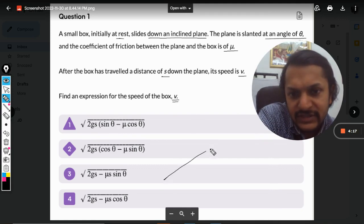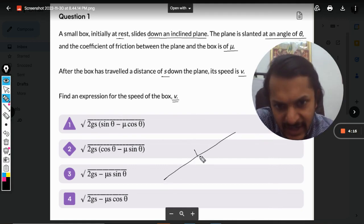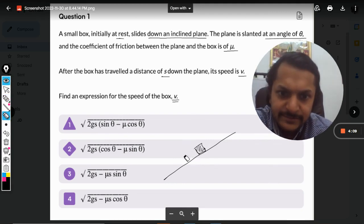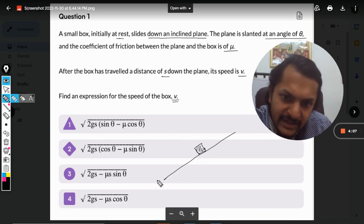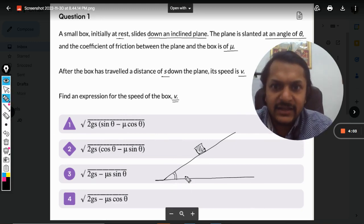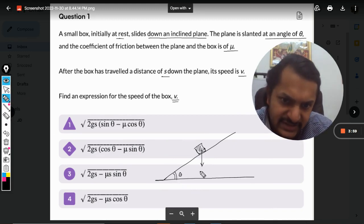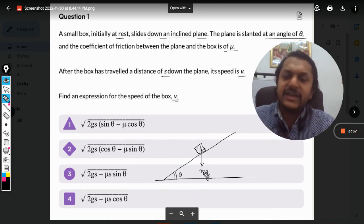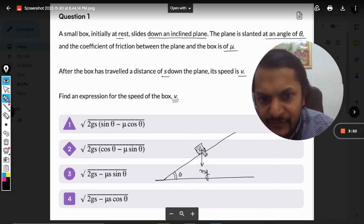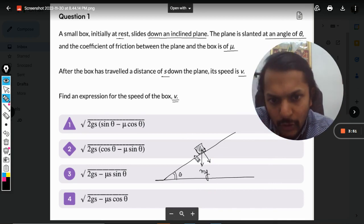So what is happening now is, let's say this is the inclined plane and this is the body sitting on the inclined plane. This is how we draw it, and this angle is theta. So what is happening here is this is the